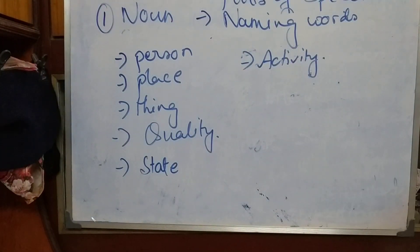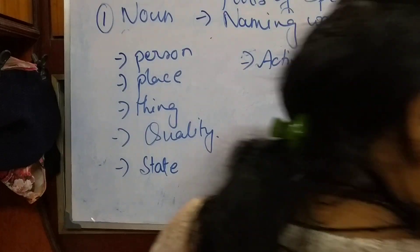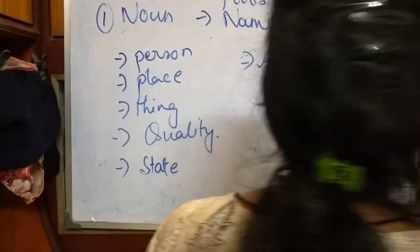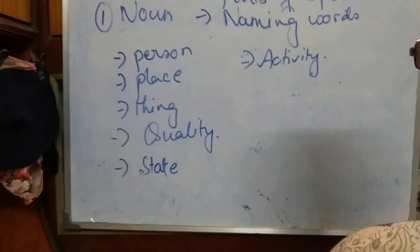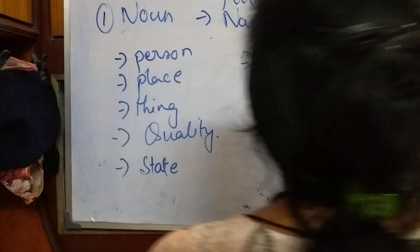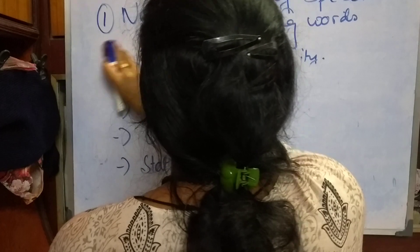The four types of noun are: proper noun, common noun, collective noun, and abstract noun.